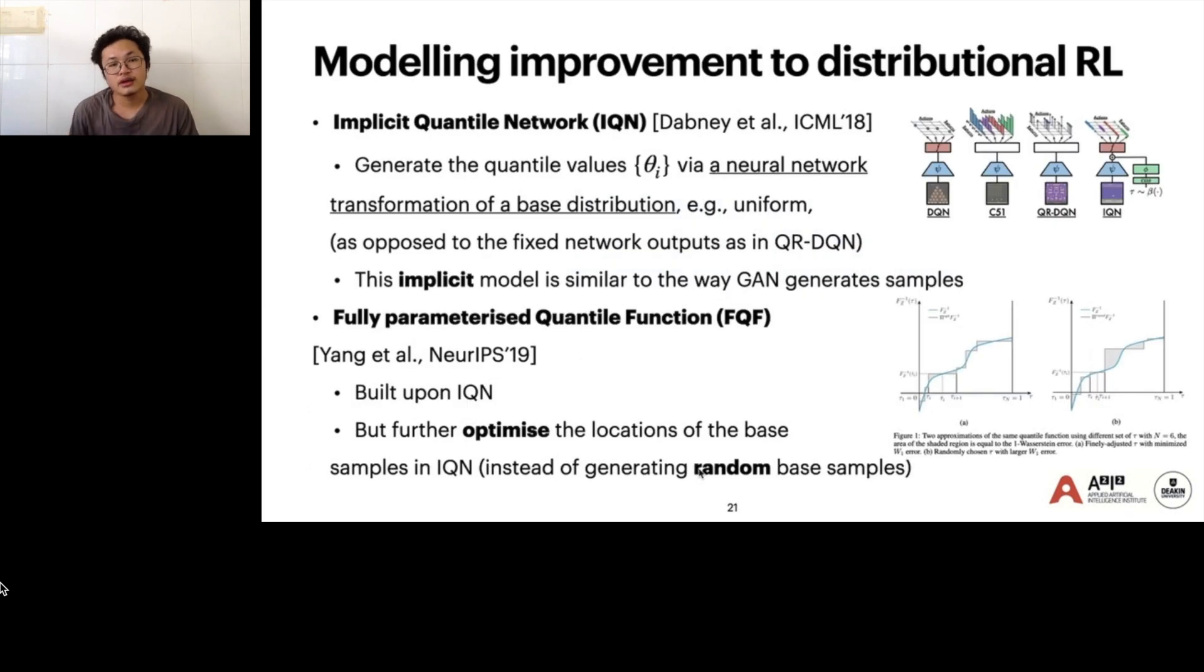Besides that, there are some other modeling improvements to distributional RL. The first one is the implicit quantile network, IQN, which generates the quantile values by the neural network transformation of the base distribution. This implicit model is similar to the way that GAN generates samples. The second model is fully parameterized quantile function, FQF, built upon IQN, and it solves the optimal location of the base samples in IQN.